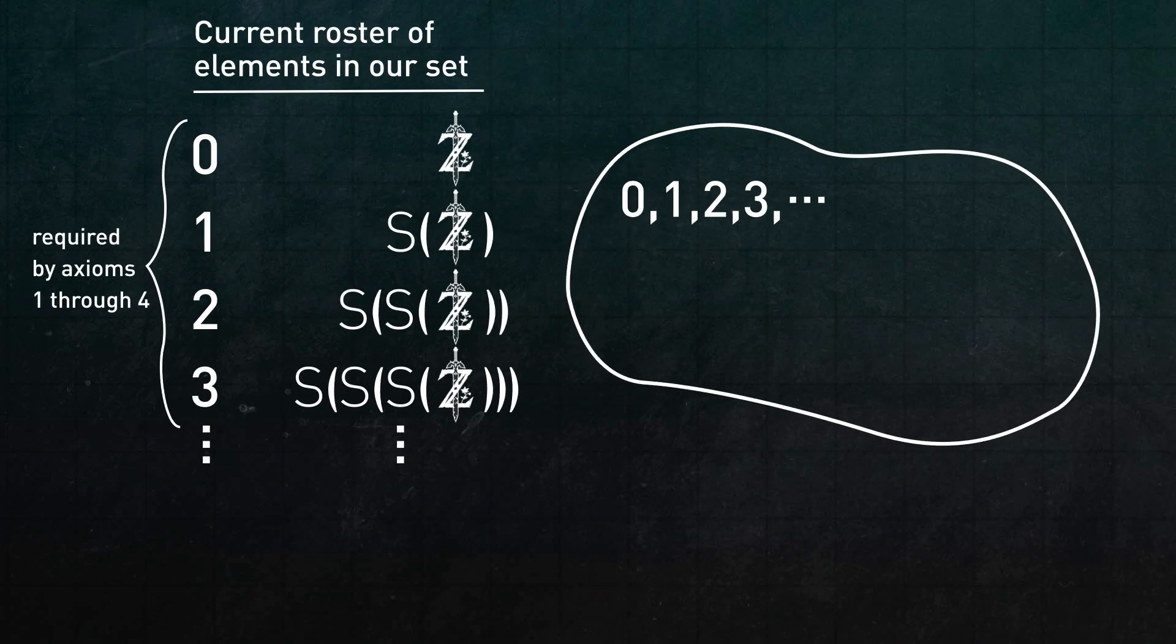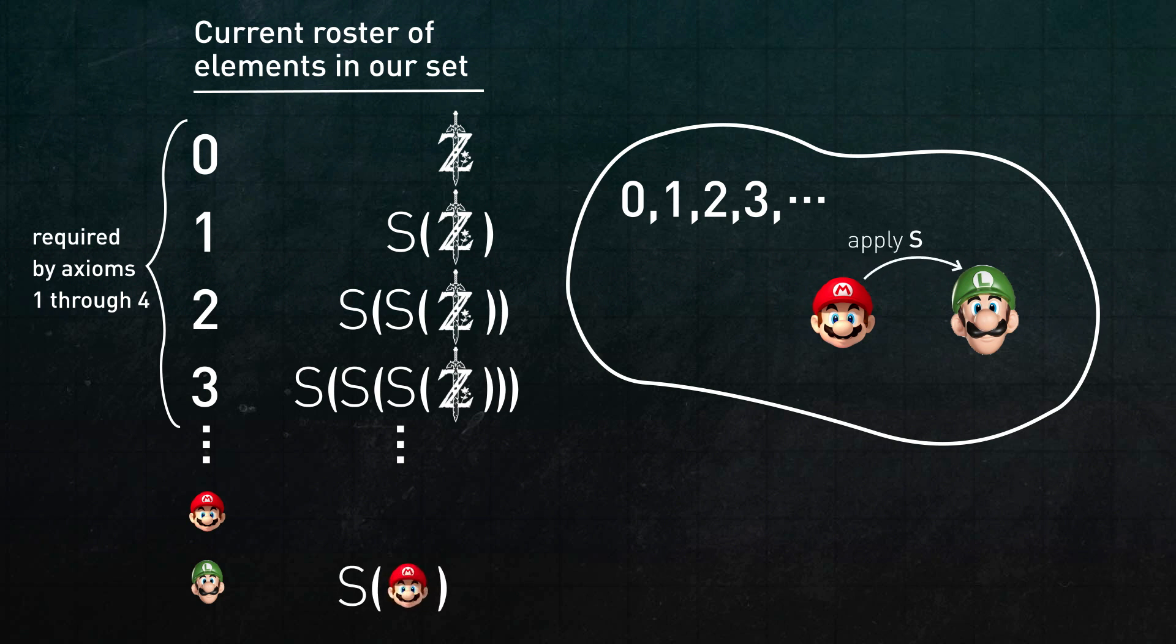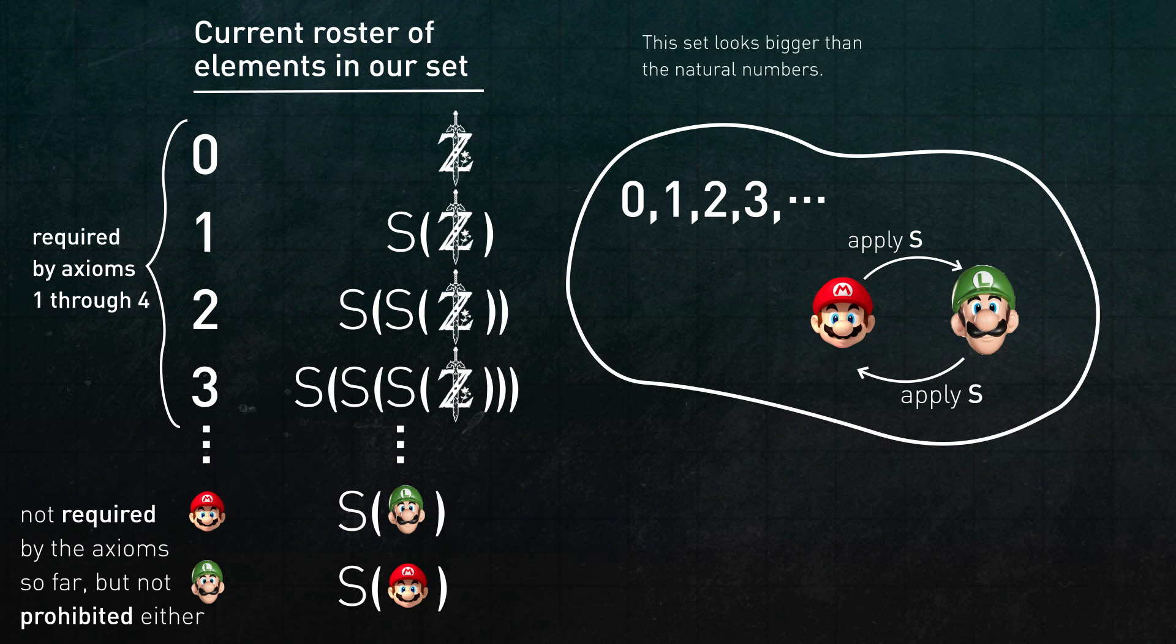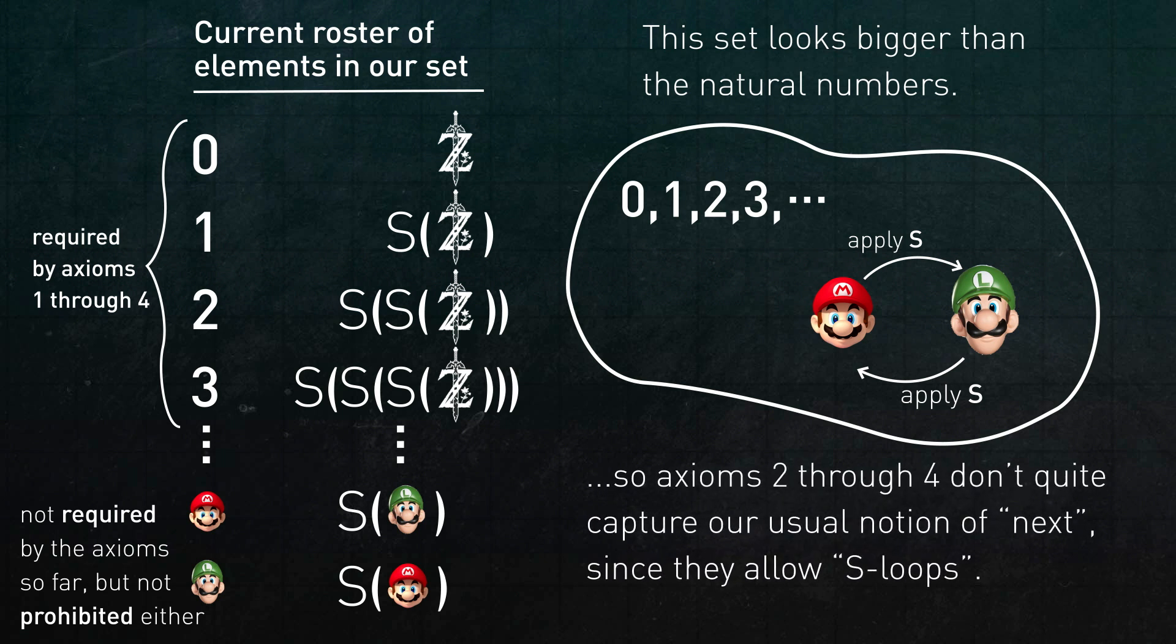Suppose that we throw two other characters into n. Let's call them Mario and Luigi. And suppose it turns out that s of Mario is Luigi, and s of Luigi is Mario. Tacking on these plumbers with this weird s behavior doesn't violate any of the axioms so far, but it does leave us with a set that looks somehow bigger than the familiar natural numbers.